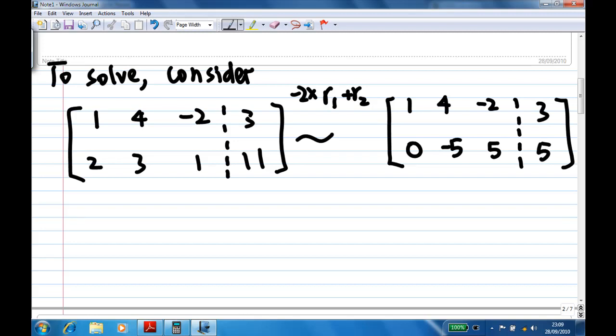Now I multiply the second row by minus 1. This will give me 1, 4, minus 2, 3, and 0, 5, minus 5, minus 5.